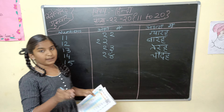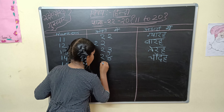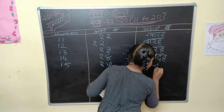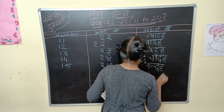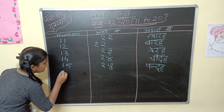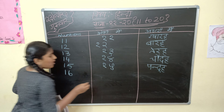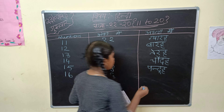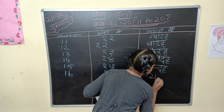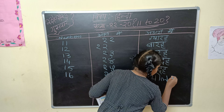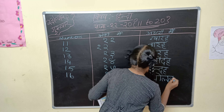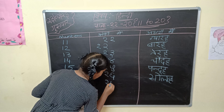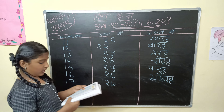Fifteen is pandra. Fifteen is pandra. Then sixteen is solaha. So-la-ha. Solaha. Solaha.